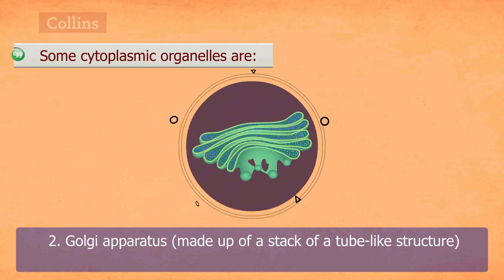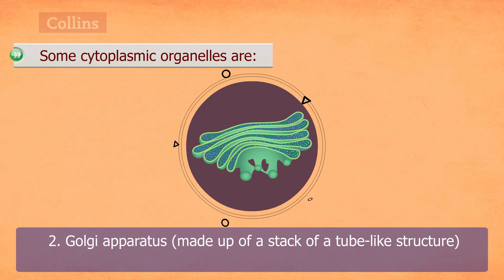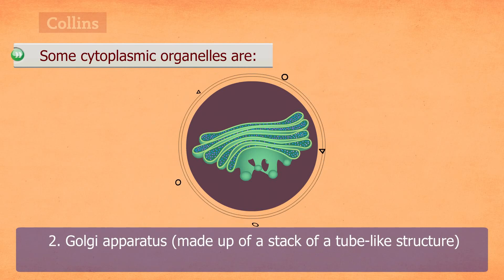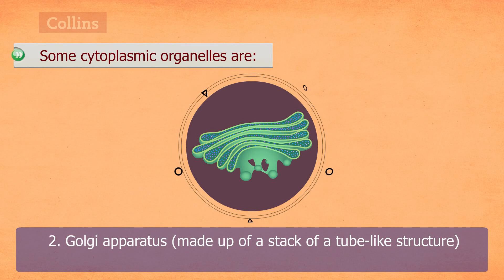Golgi apparatus. It is made up of a stack of tube-like structures which are responsible for the secretion of chemical substances such as enzymes, hormones, and proteins.